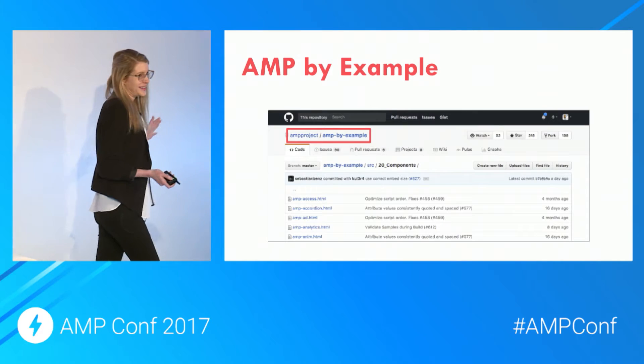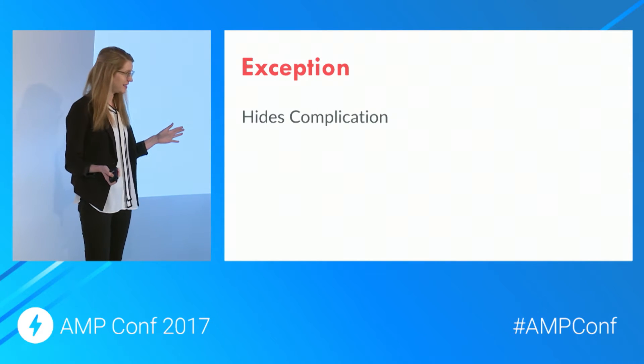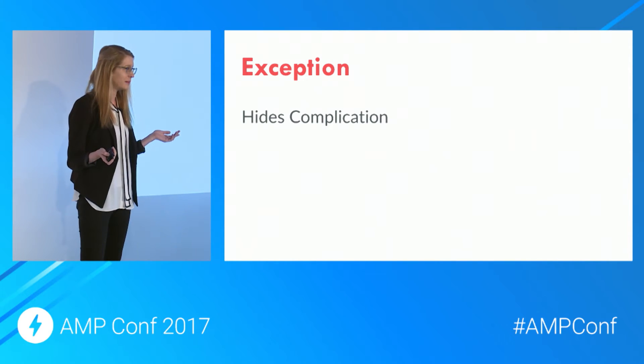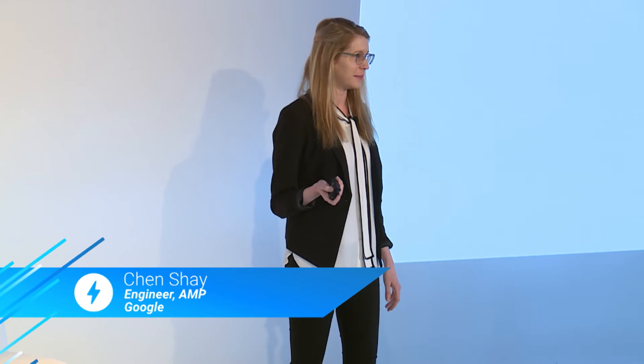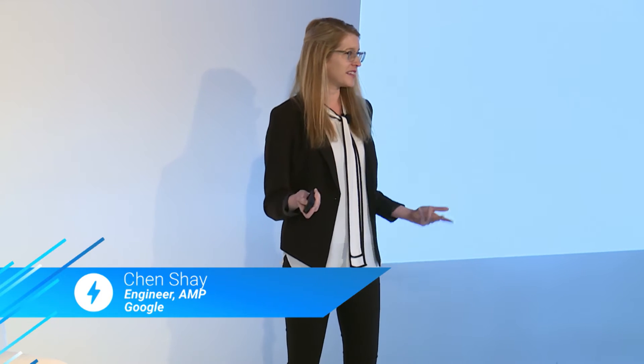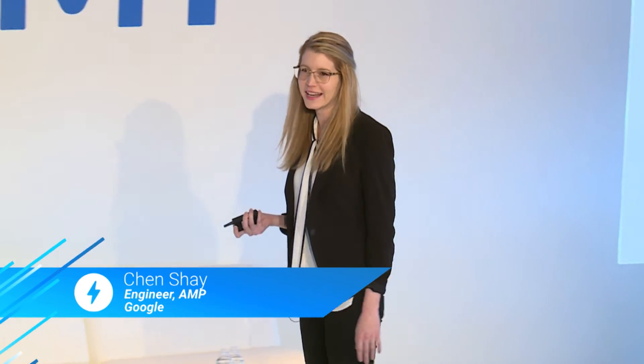There is an exception, as there always is, and that's a use case that hides complication. Another example is amp-rating — it turns out that amp-rating is very similar to amp-selector as well, and it's just a little bit of CSS. Except it's actually pretty complicated, and it's a lot of work to put on the developer's shoulders. So this does exist in AMP by Example, but because it's complex, we also made an AMP component for it.